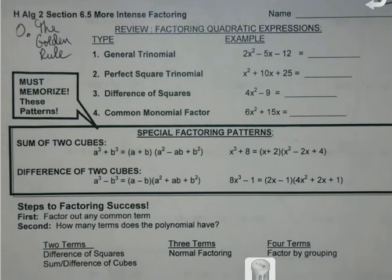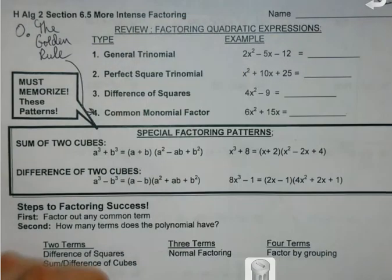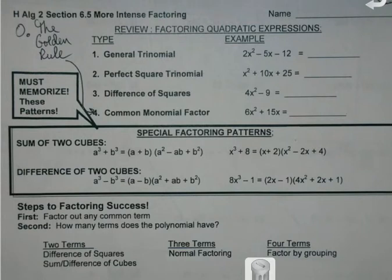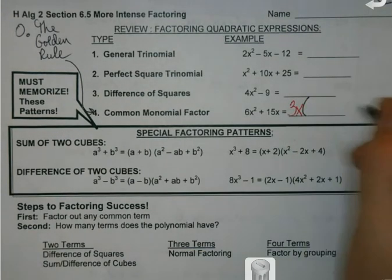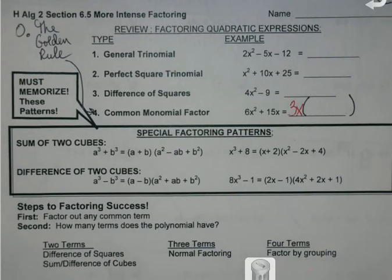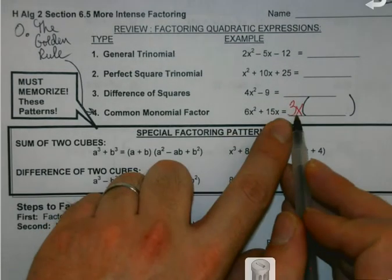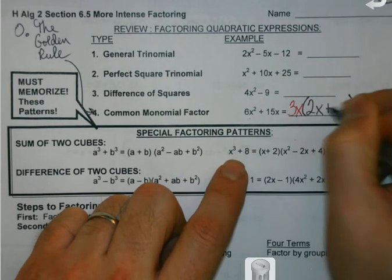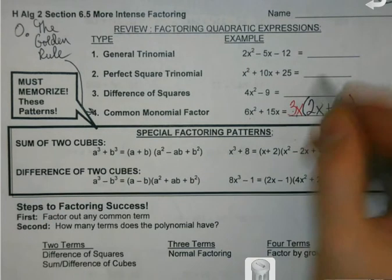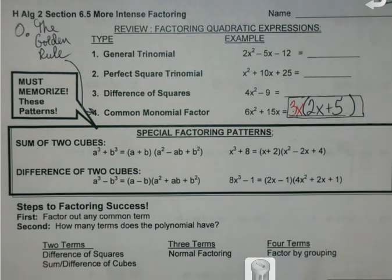The easiest way to see the golden rule is down here in number four. When I look at 6x² + 15x, I have to ask myself: is there something those two terms have in common that I can pull out? 3 and x. So with 3x on the outside, what do I multiply 3x by to get 6x²? 2x, plus 5, because 3 times 5 is 15 and I already have my x. This is one of the simpler forms — if we're fortunate enough that all we've got to do is take out a common factor.